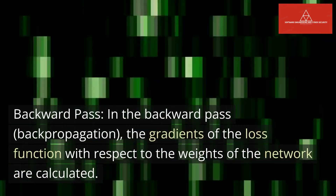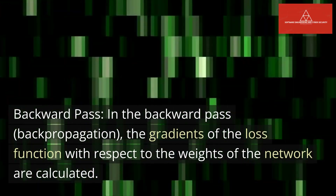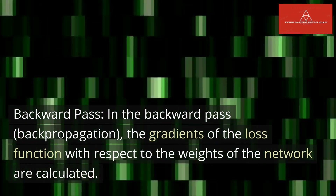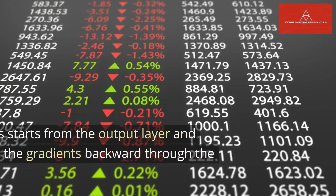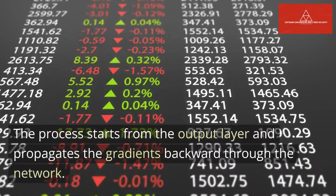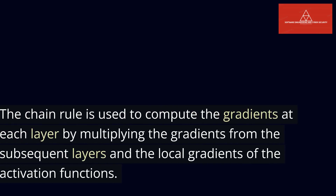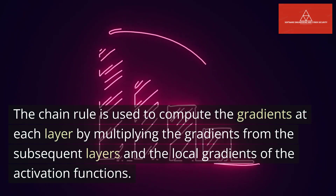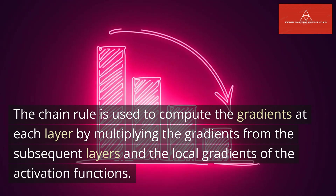Backward pass (backpropagation): The gradients of the loss function with respect to the weights of the network are calculated. The process starts from the output layer and propagates the gradients backward through the network. The chain rule is used to compute the gradients at each layer by multiplying the gradients from the subsequent layers and the local gradients of the activation functions.